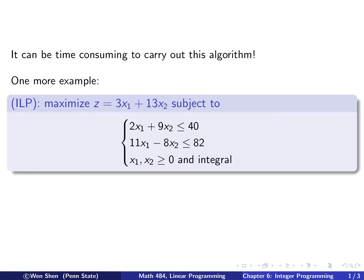So here is the second example we'll go through. We will look at the maximization problem with the two constraints and integral constraint also on the variable. Let's follow the algorithm.